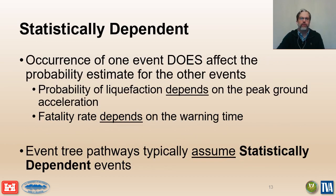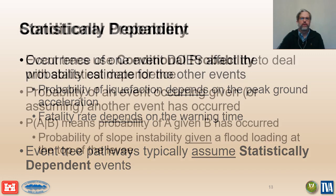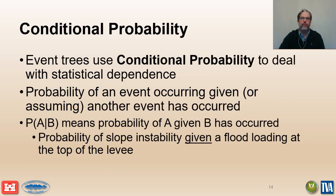In a risk analysis, events are statistically dependent when the occurrence of one event affects the probability estimates for the other events. The events that make up a potential failure mode, including the hazard, the system response, and the consequences, are typically assumed to be statistically dependent in a risk analysis. This means that the probability of an event is estimated assuming that all of the predecessor events have occurred.